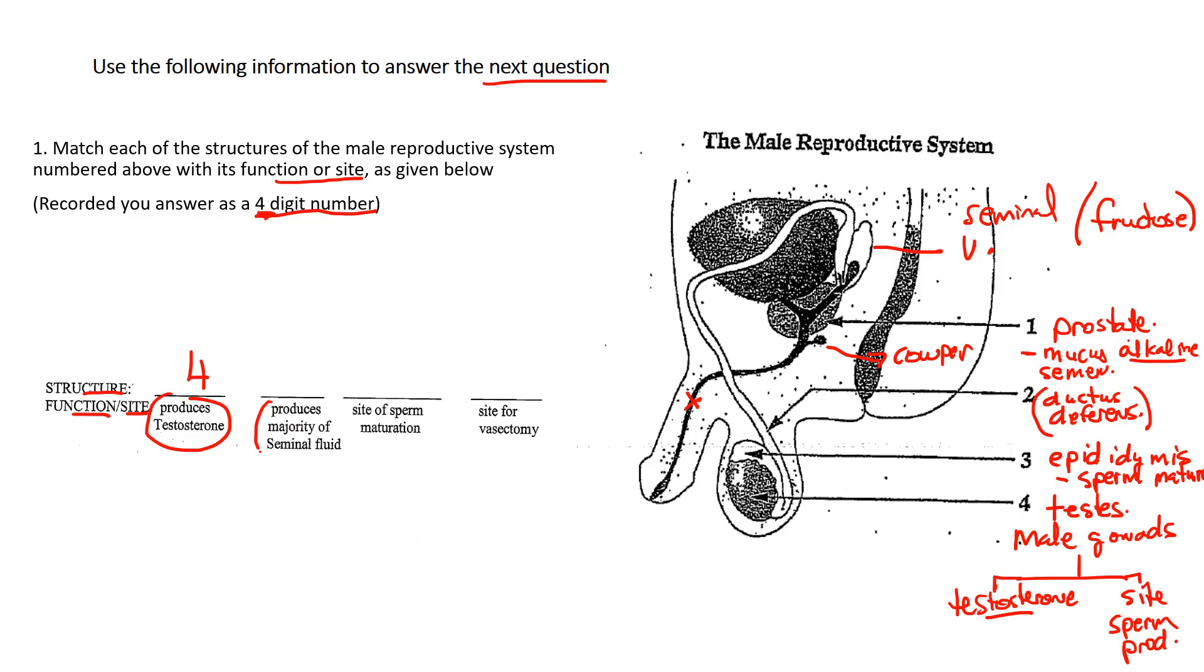Produces the majority of seminal fluid. We said that the three structures that provide or contribute to the seminal fluid is the seminal vesicles, and the cowpers, not required to label, and the only one that is required is number one, the prostate. So just by process of elimination, we know that and maybe we didn't know that it contributed the majority of it, but we can use a process of elimination to come up with the fact that it must be the prostate that does this.